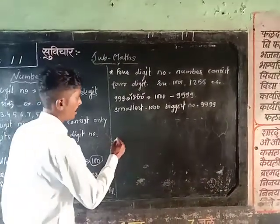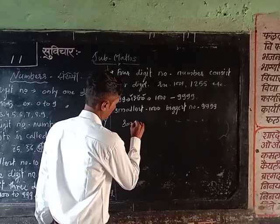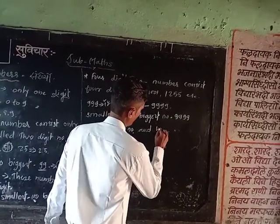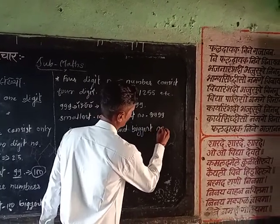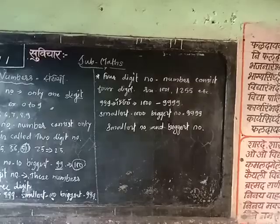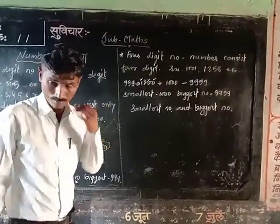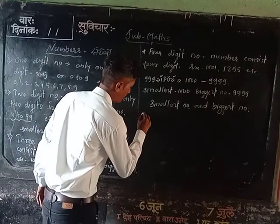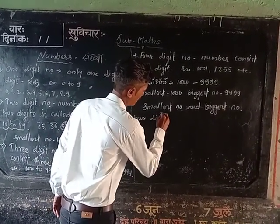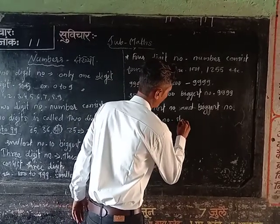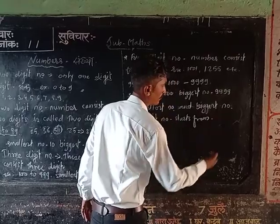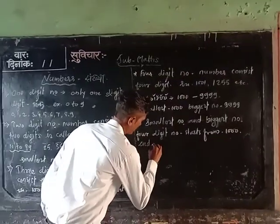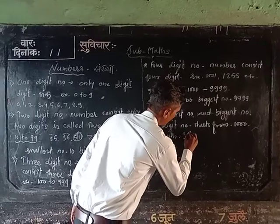After that, we are studying about the smallest number and biggest number. Now, how to identify the smallest and biggest number in a 4-digit set. The 4-digit number starts from 1,000 and ends with 9,999.